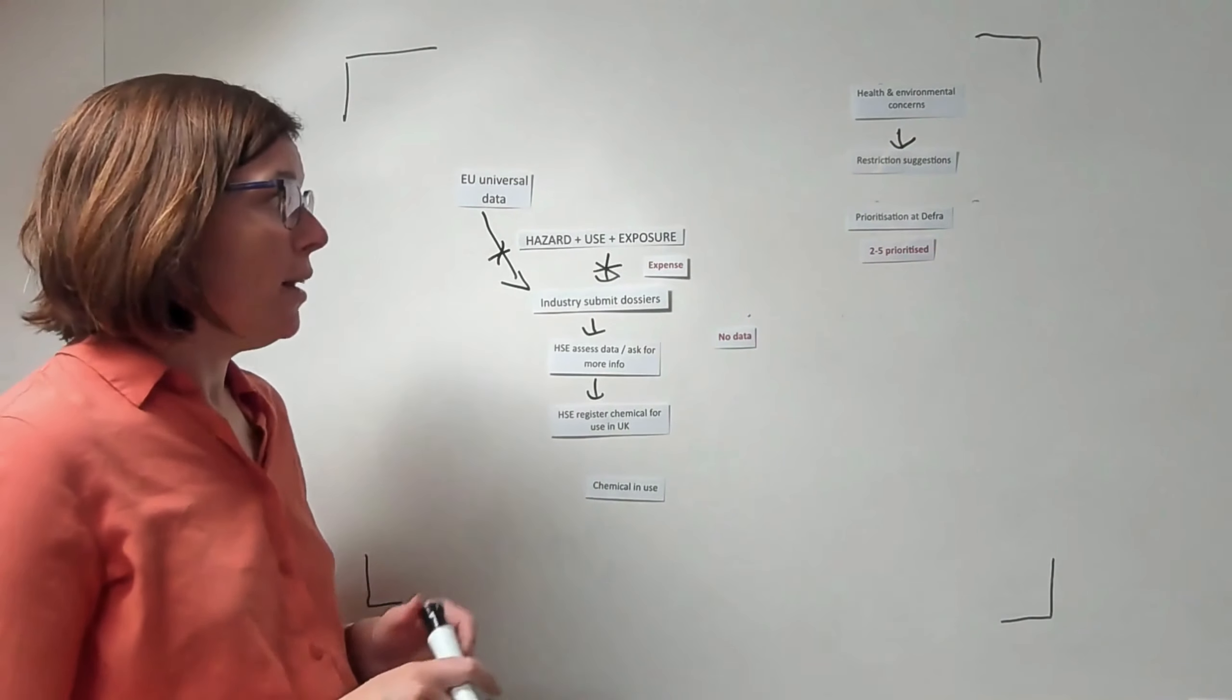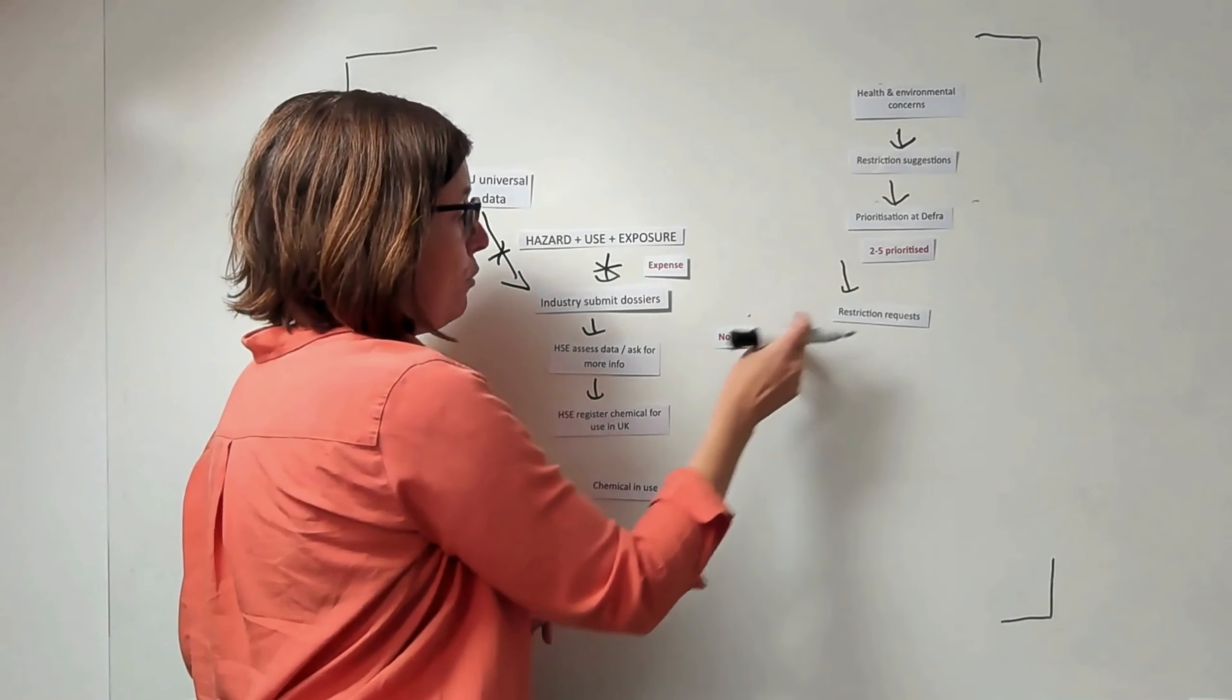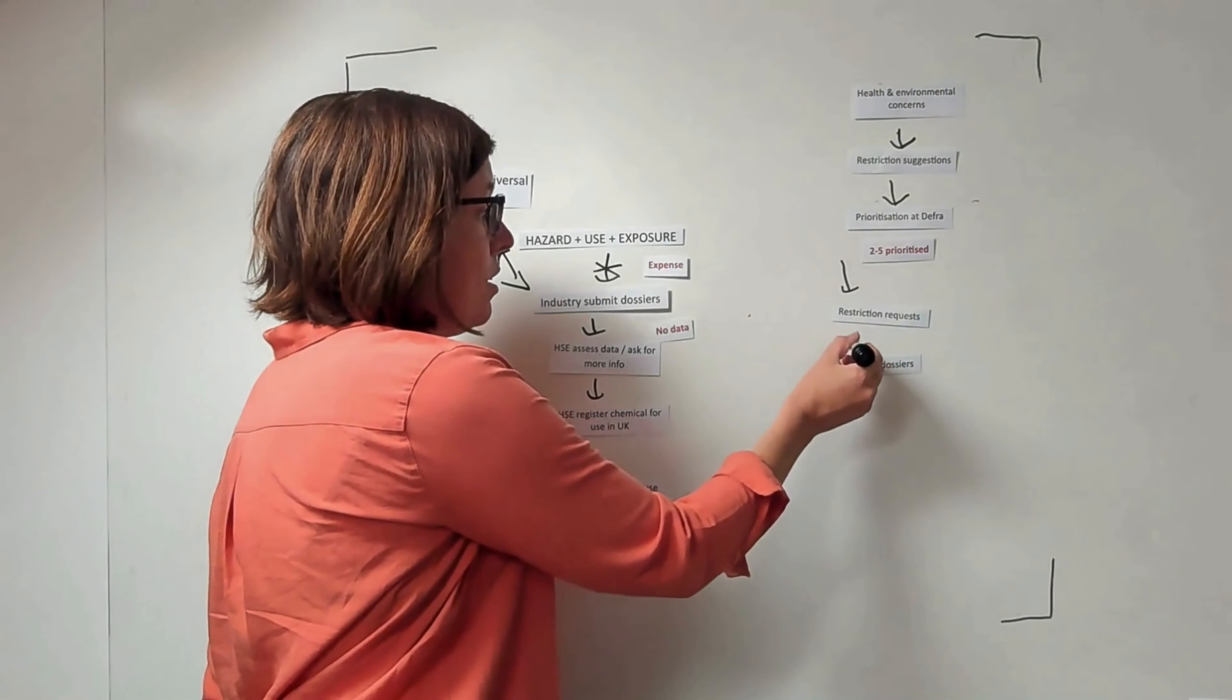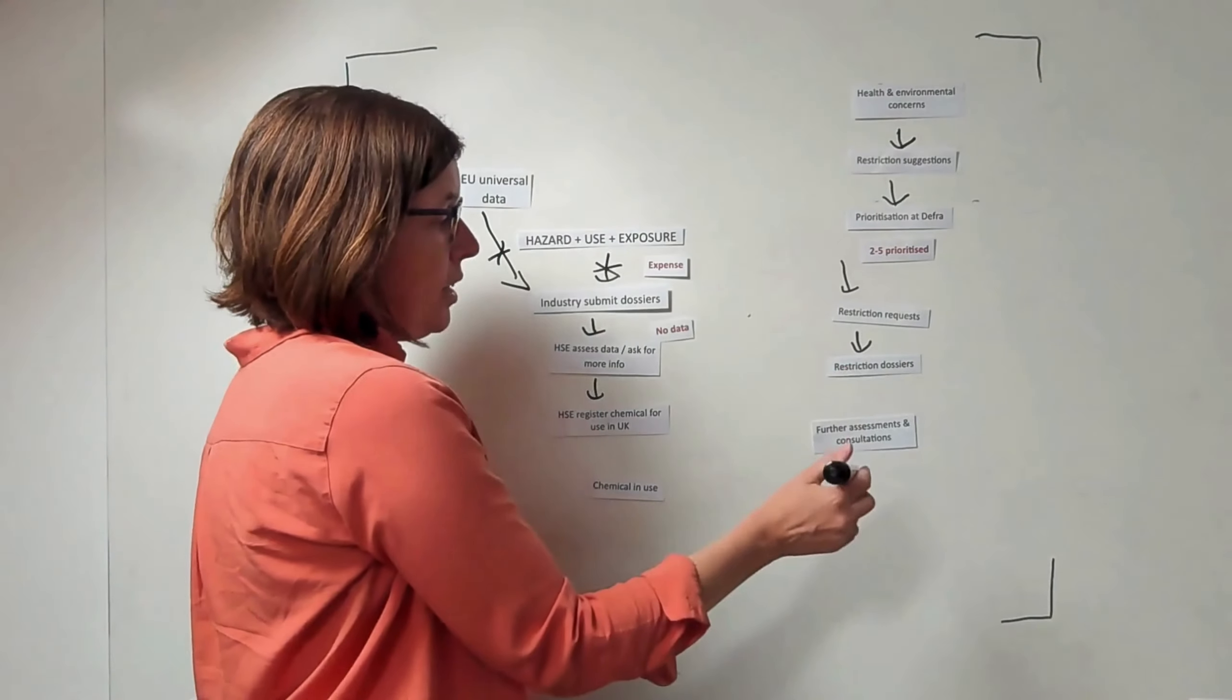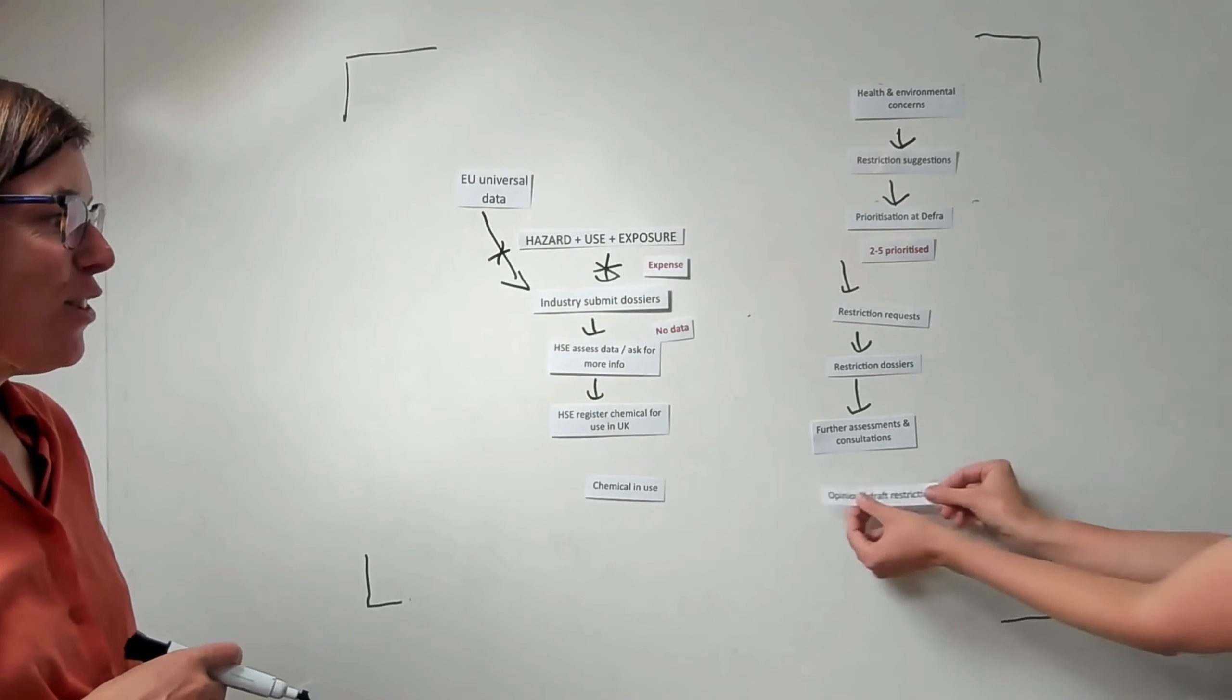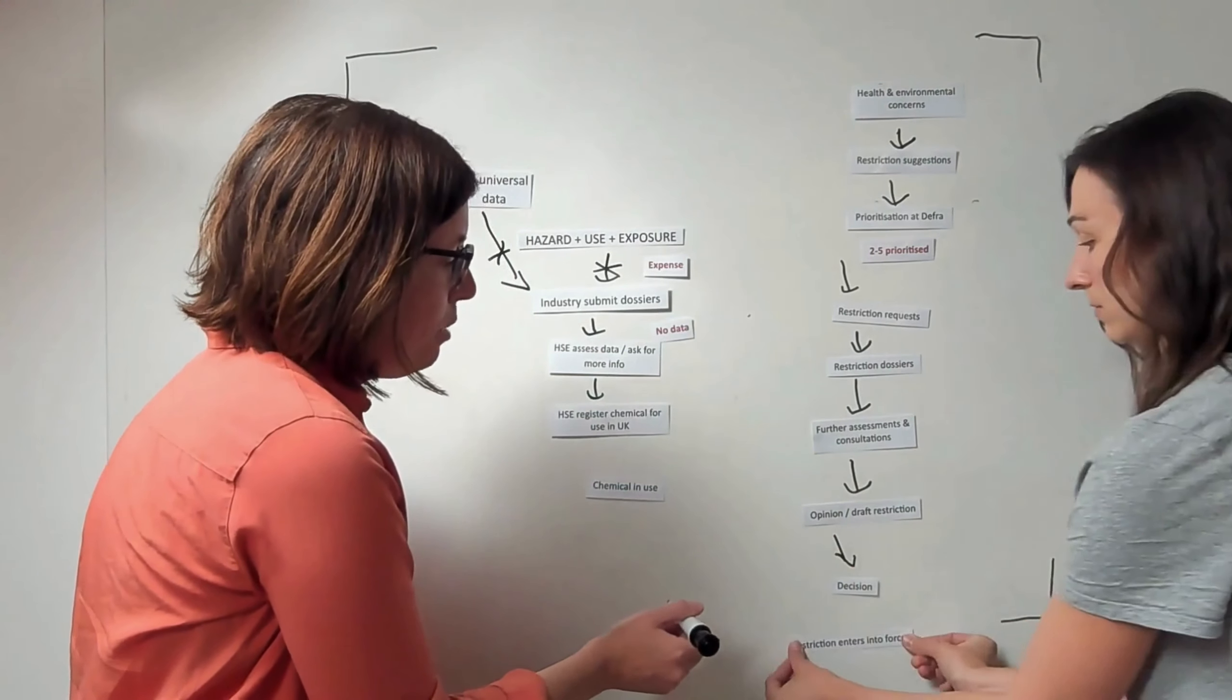Only a very few chemicals make it through to the next stage, which is a restriction request coming through. This restriction request will then hopefully make it through to a restriction dossier. We're finding that these restriction dossiers getting to this stage is taking some time. Once it does get to this stage, there are a series of further assessments and consultations, and finally a draft opinion and restriction is drawn up and a decision is made.